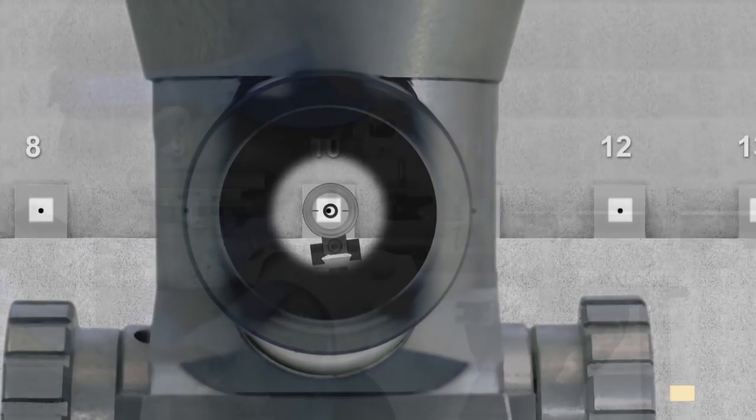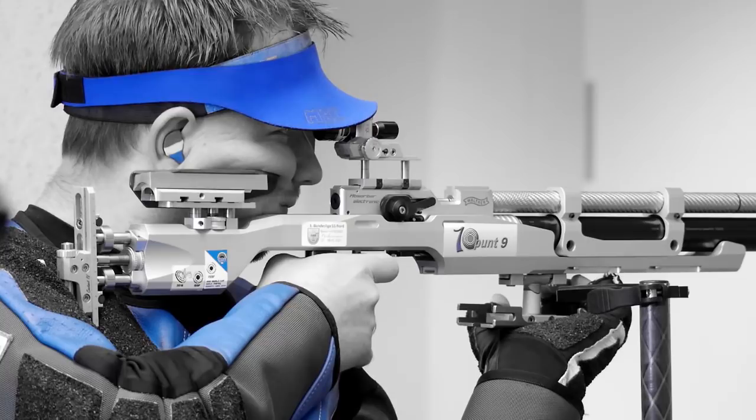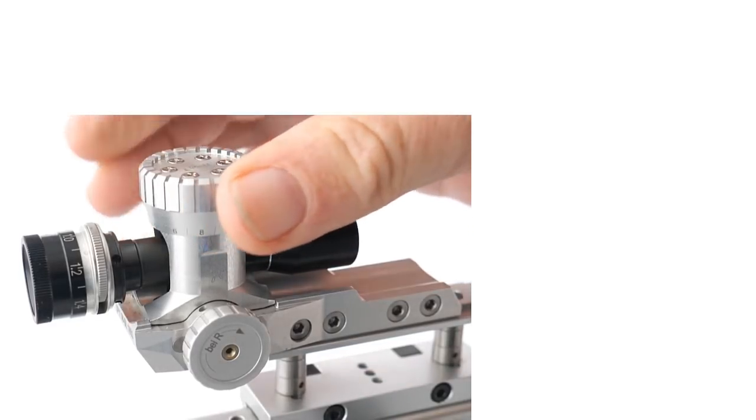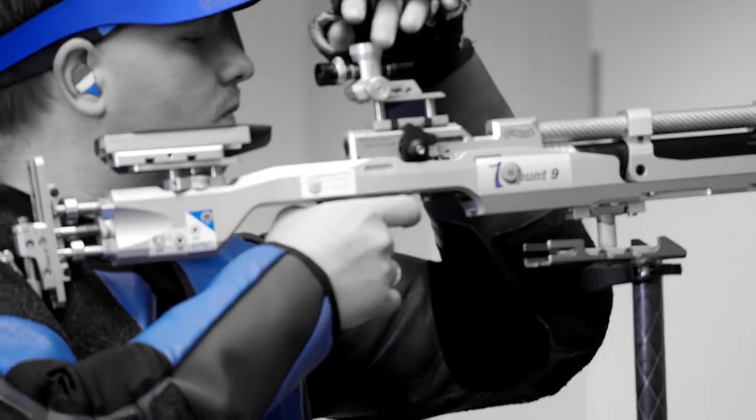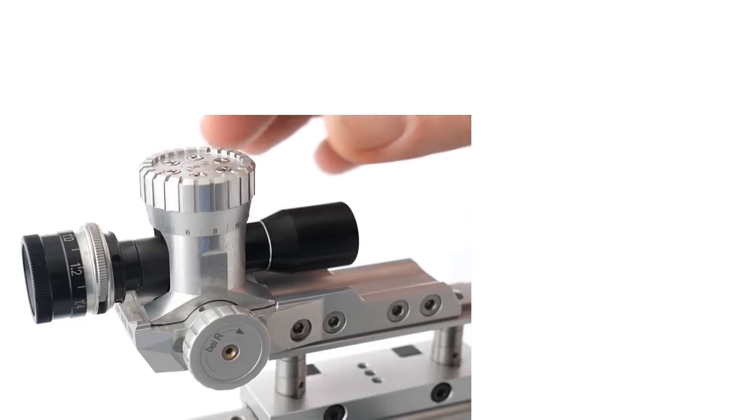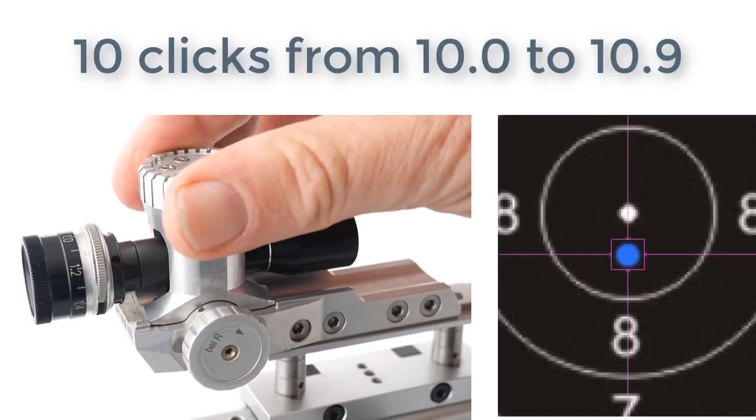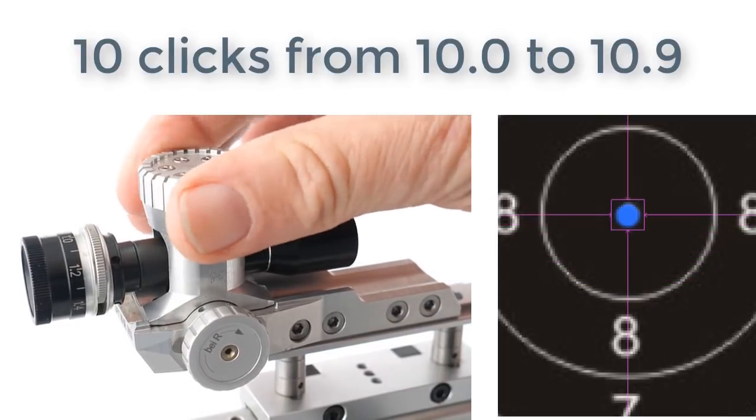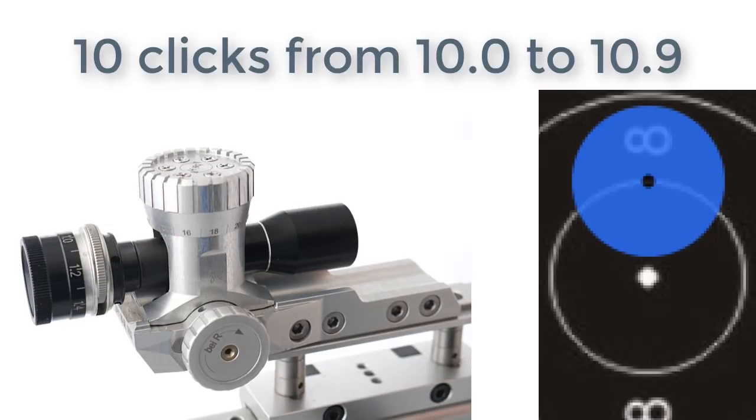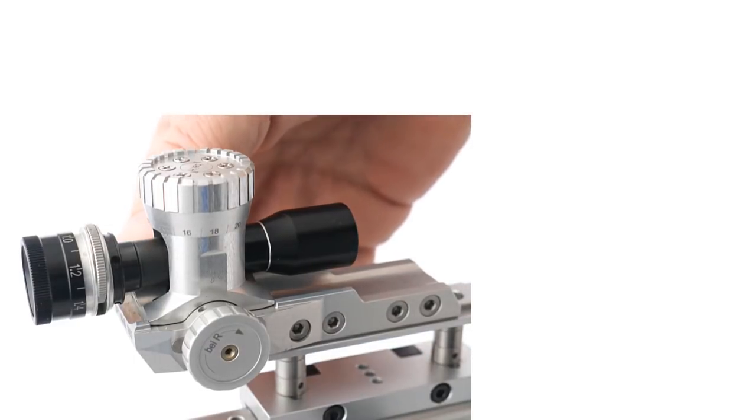The accuracy of the diopter is a very important function of your sighting. Whenever you click this diopter you will have a move of a tenth of a ring on an air rifle target. This means ten clicks will bring you from the 10.0 to the 10.9. The same by the way with left and right.